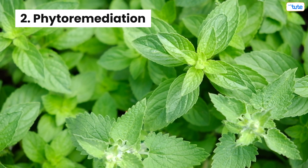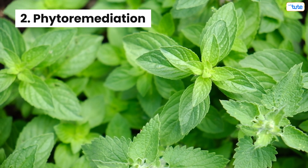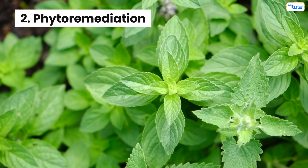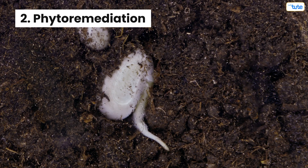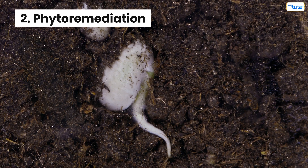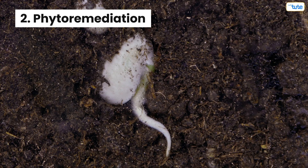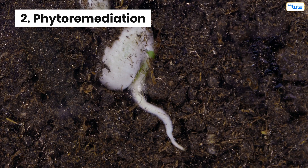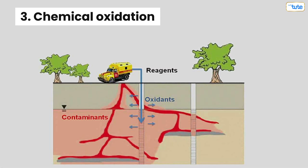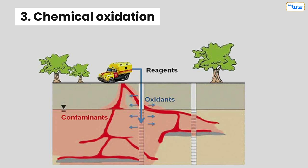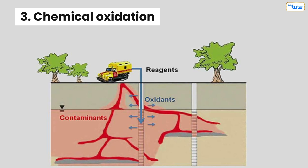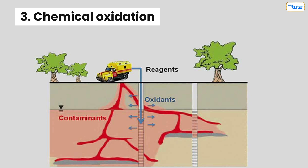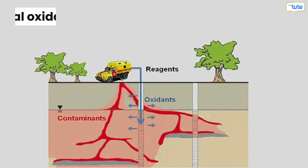Phytoremediation involves using plants to remove contaminants from the soil. The plants absorb the contaminants through their roots and break them down into less harmful substances. Chemical Oxidation involves adding chemicals into the contaminated soil to break down the contaminants into less harmful substances.